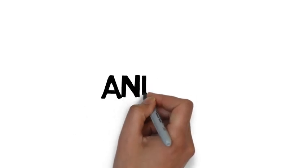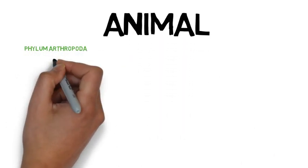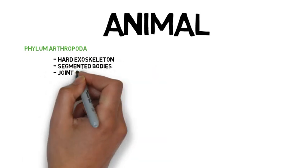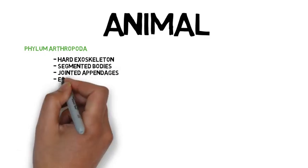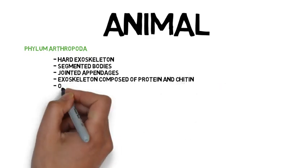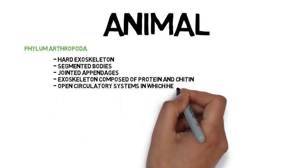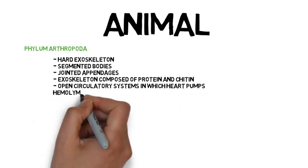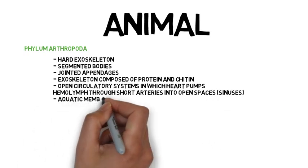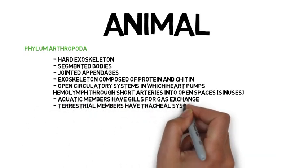Animals — Phylum Arthropoda. They have hard exoskeletons, segmented bodies, jointed appendages, an exoskeleton composed of protein and chitin, and an open circulatory system in which the heart pumps haemolymph through short arteries into open spaces and sinuses. Aquatic members have gills for gas exchange, and terrestrial members have tracheal systems of branching tubes leading from their surface throughout their body.